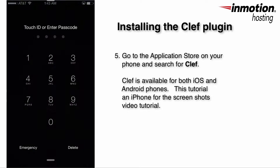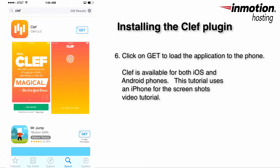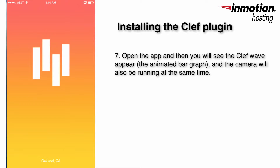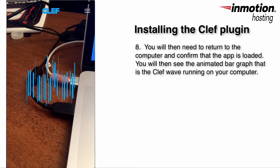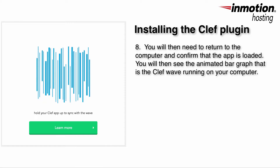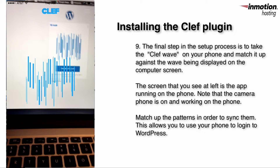Here you can see video of the Clef app being loaded on an Apple phone. When you see the Clef app running, you'll see the camera running in the background with the Clef wave overlaid on top of it. Once you see the Clef app running on your smartphone, you'll need to go back to your computer and confirm that the application has been loaded. WordPress will then show the Clef wave on its screen.